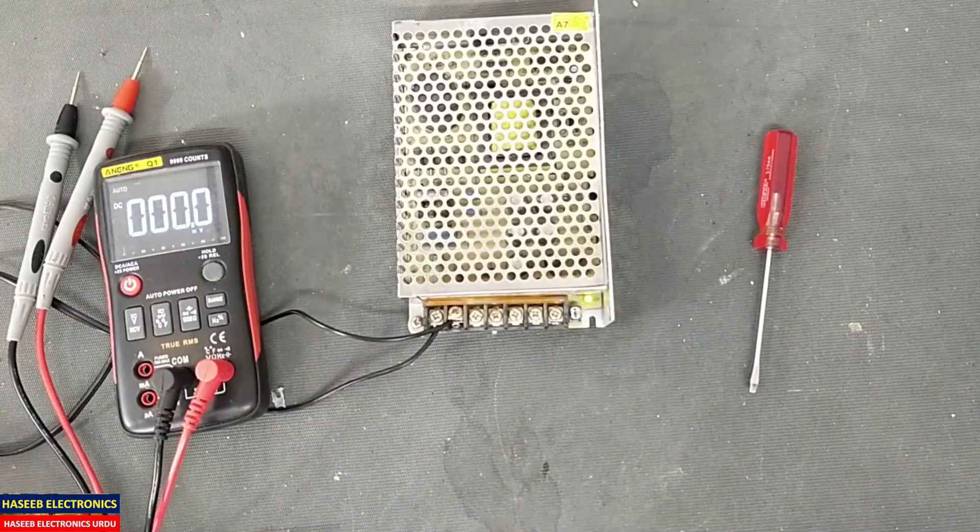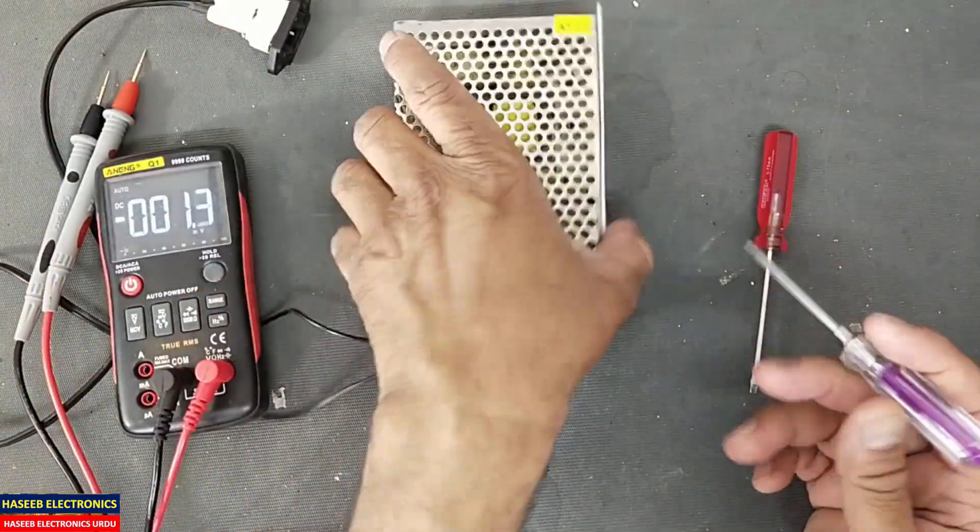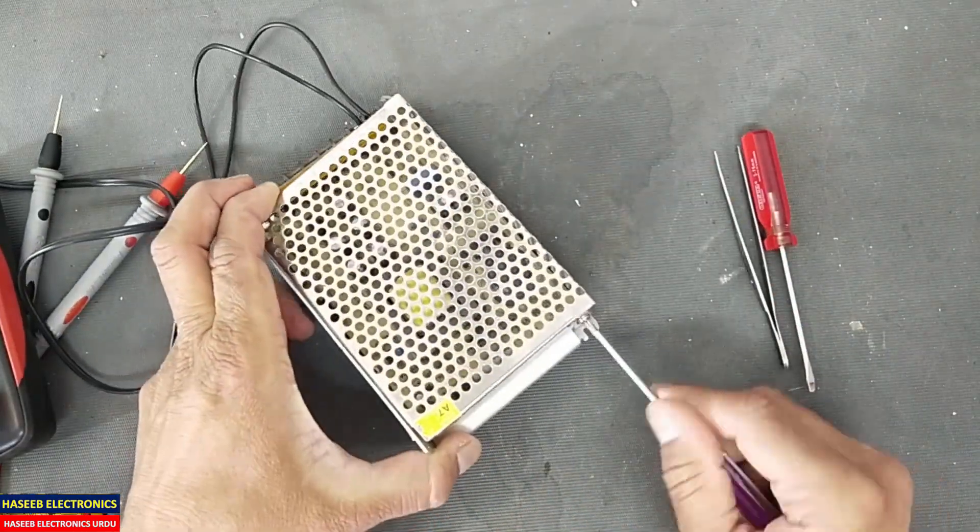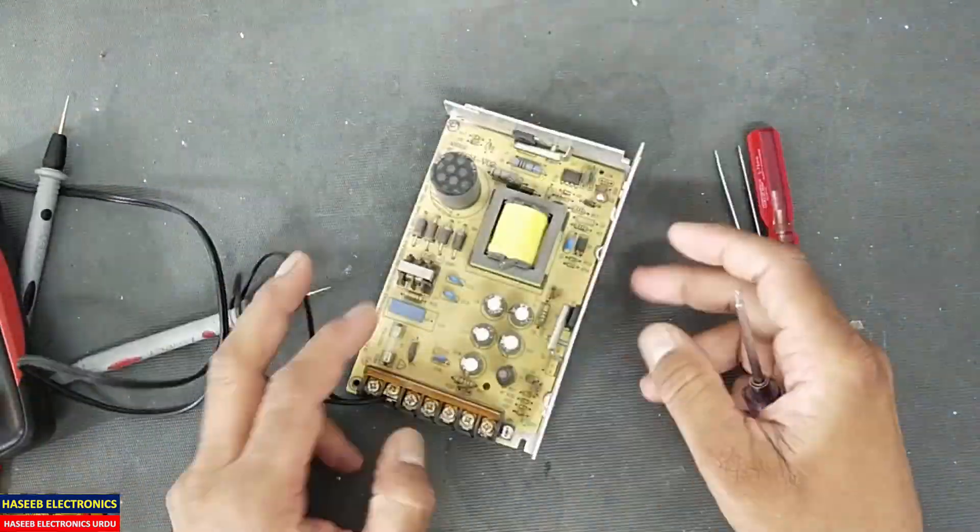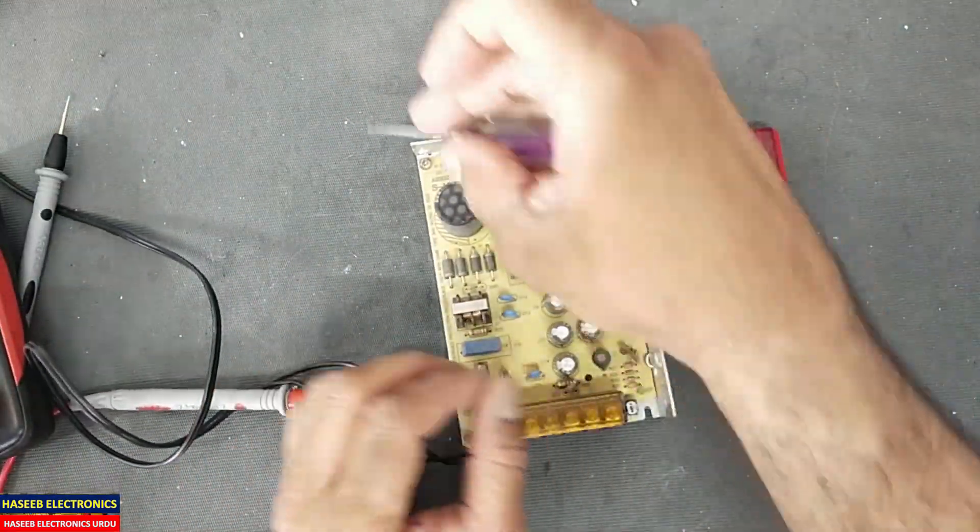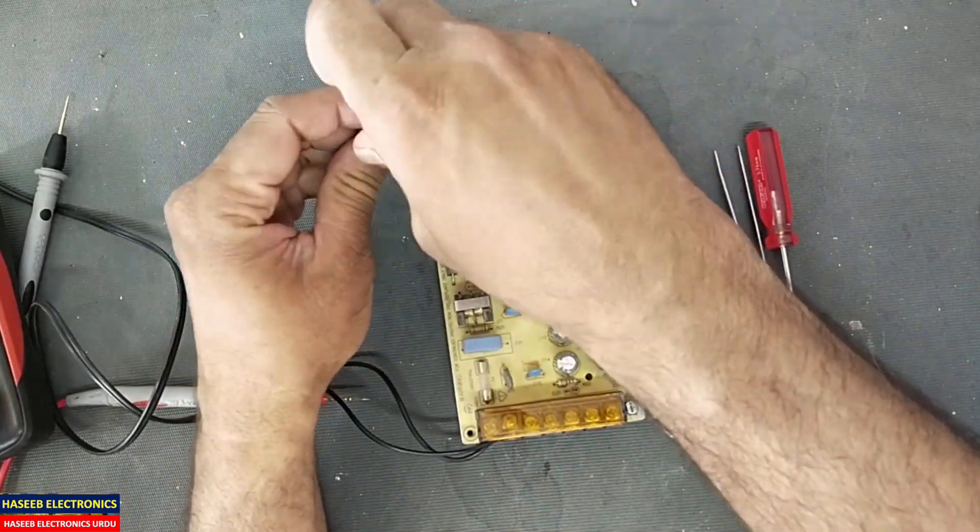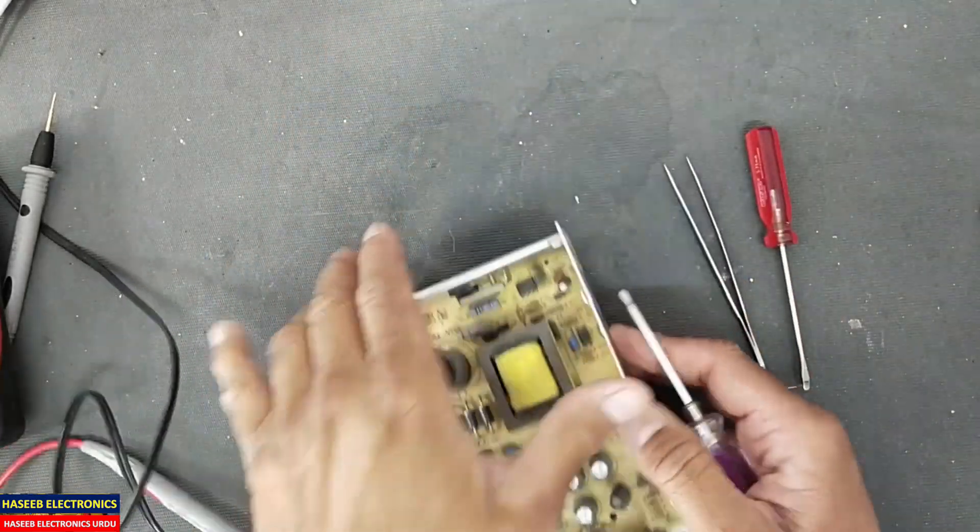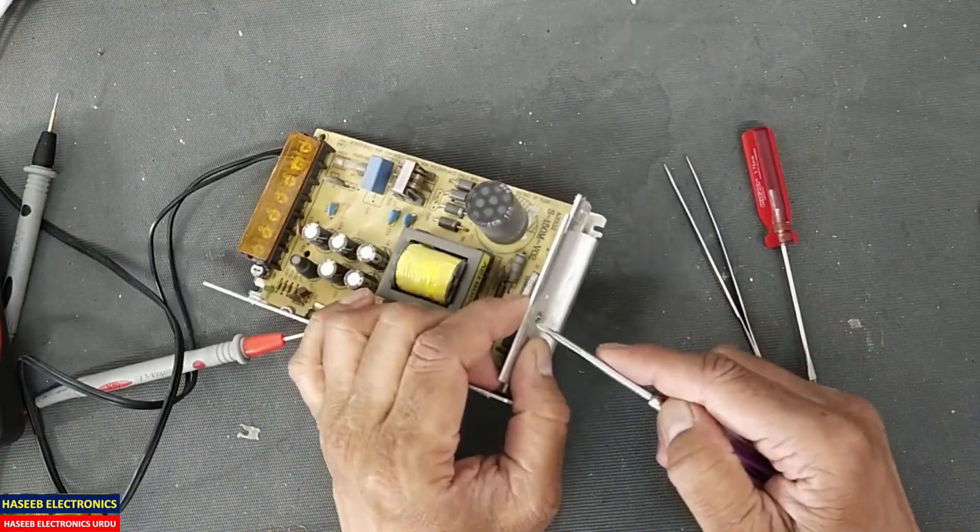Let's check it and remove the power. Open this screw here, remove the heat sink.